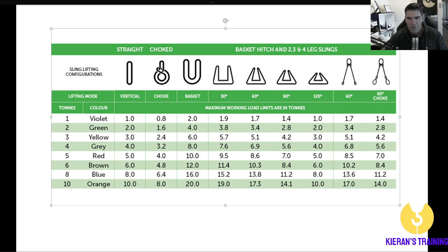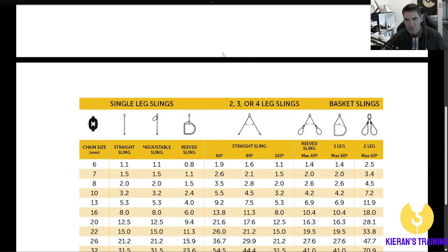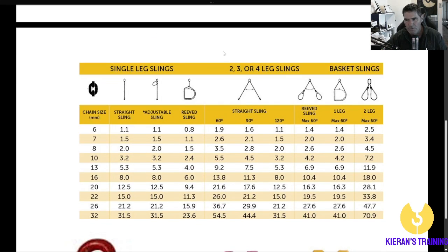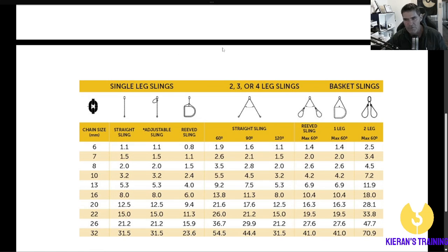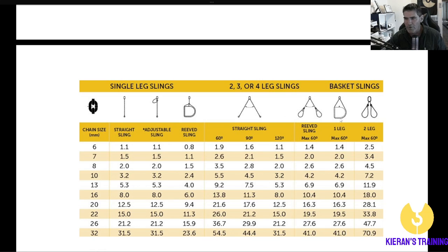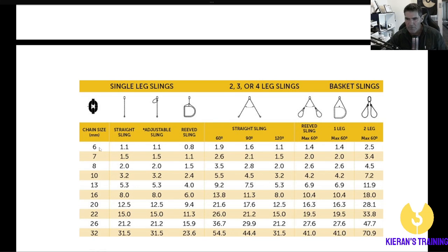Now we'll roll down and go to chains. This is a typical chain chart — same again, you've got your chain size down here and your different configurations across the top. For a straight single leg directly attached, if you've got a 10mm chain you'll be good for 3.2 tonne.